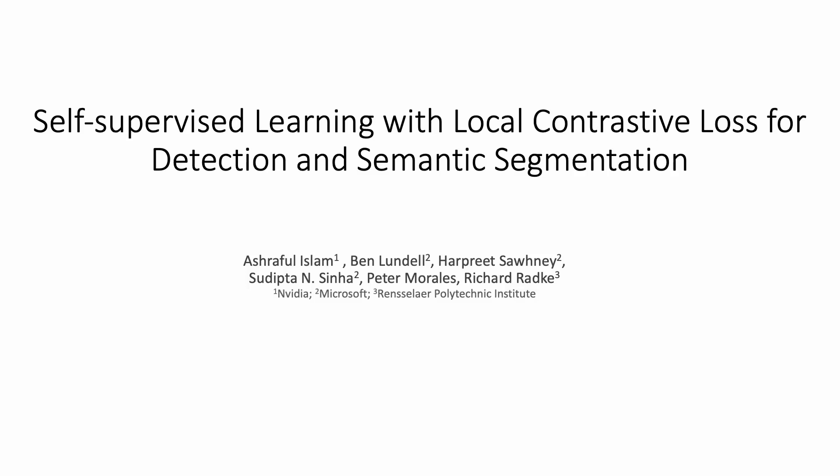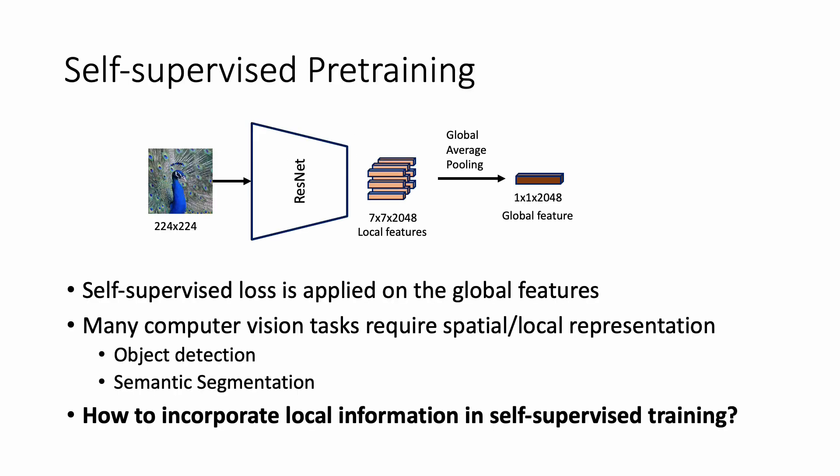Hello everyone, welcome to my presentation. I am excited and happy to talk about my paper titled 'Self-Supervised Learning with Local Contrastive Loss for Detection and Semantic Segmentation.' We know that self-supervised learning can be a great tool to train deep neural networks for transfer learning. In this part, I will show how we can use local image information in self-supervised learning for better representation for detection and segmentation.